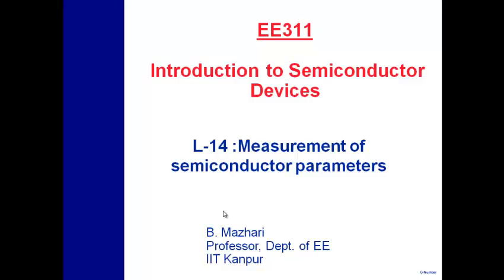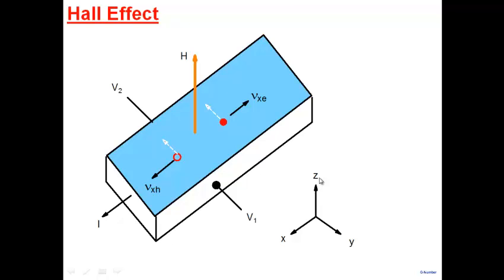Let's start — we are almost done with our discussion on basics of semiconductors. Today we'll wind up by looking at how some important parameters that we've talked about are measured, and we look at a few key experiments. One very famous experiment is named the Hall effect.